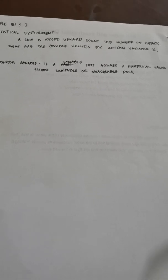So now we have here above, we have an example statistical experiment, whereas we're going to know what are the possible value or values for a certain random variable X. So random variables can only assume numerical values when there is a statistical experiment or it is taken from a given of chances. So example statistical experiment 1. So a coin is tossed upward, count the number of heads. What are the possible values for a random variable X?